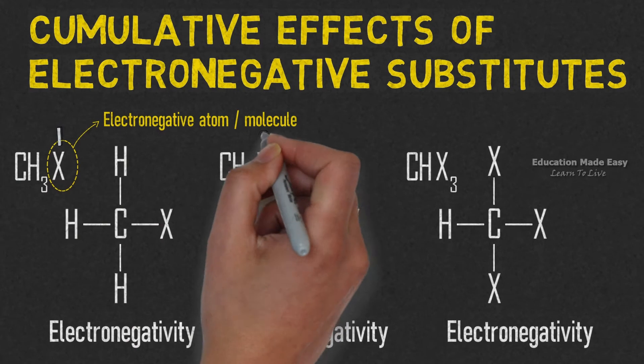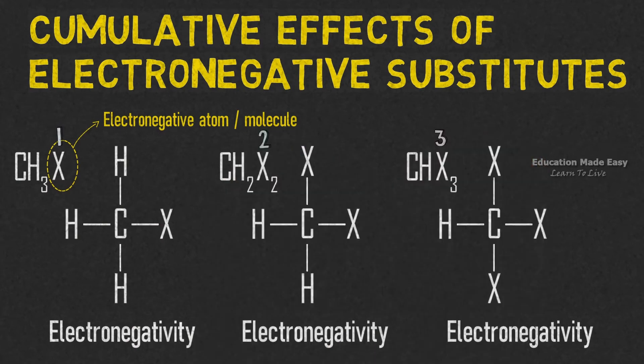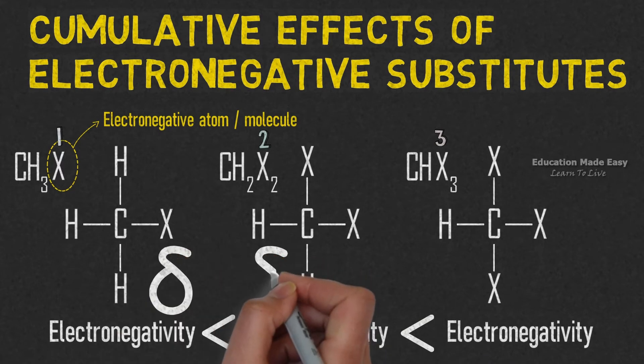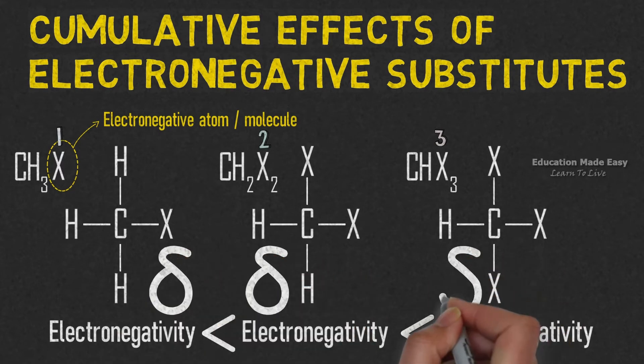As the number of electronegative substitutes increases, the electronegativity increases. Thus, the value of chemical shift small delta also increases in the same order.